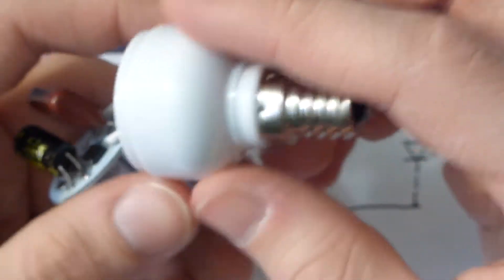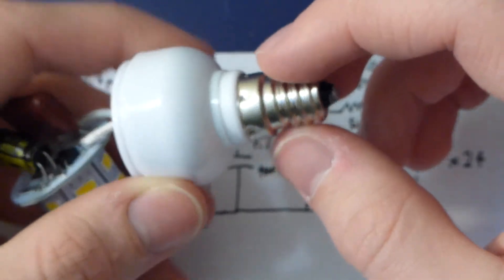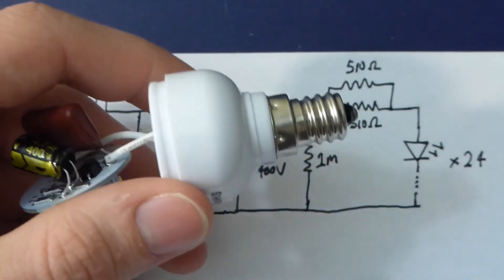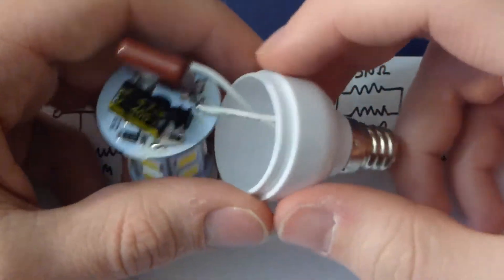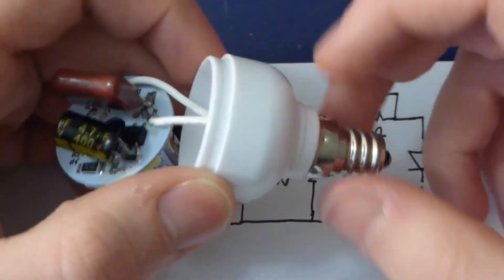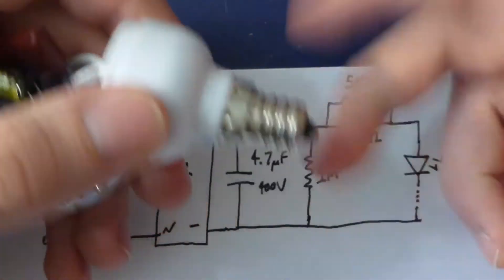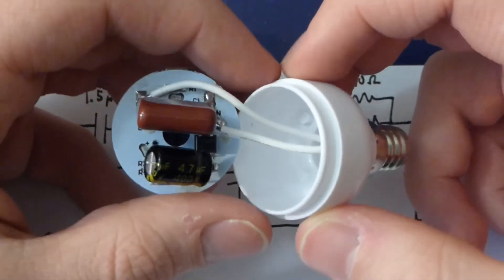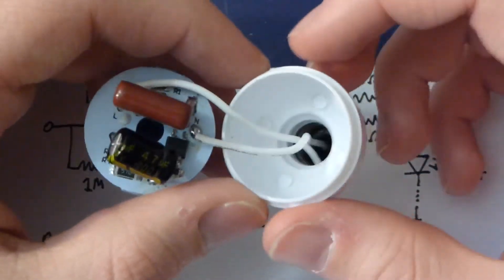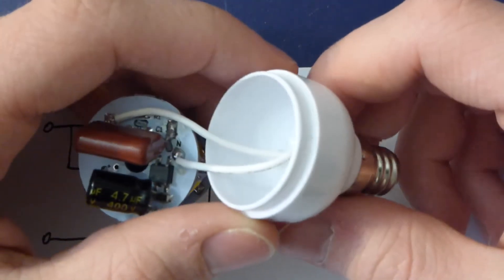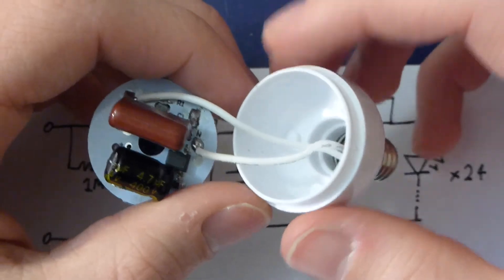I plugged this into a switch which had a dimmer on it. These are not dimmable, by the way, but I thought I could just... I've had other LED bulbs that you can just put them in a dimmer circuit as long as you have the dimmer at maximum, you're totally fine.